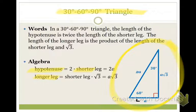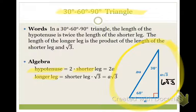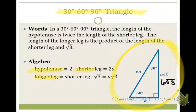What if I gave you the long leg value — say, 6 times the square root of 3? You'd go to short leg next, because A comes before the square root. The short leg is whatever number is in front of the square root of 3, so it's 6. And if 6 is the short leg, the hypotenuse is 12 — just double the short leg.